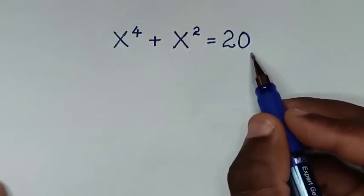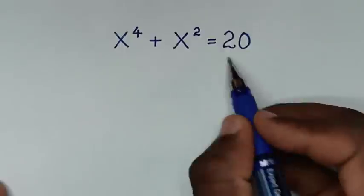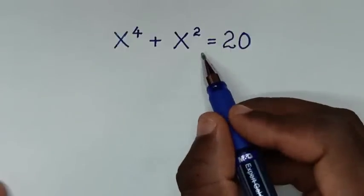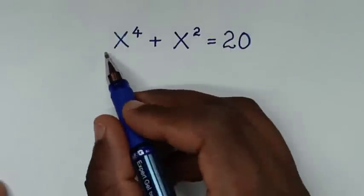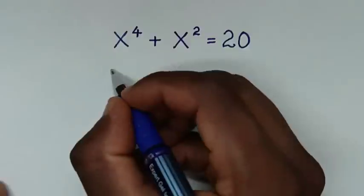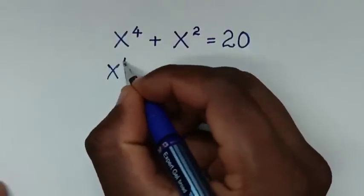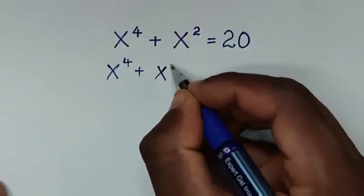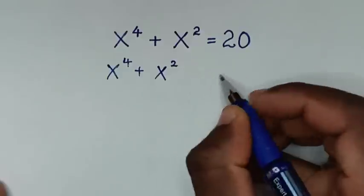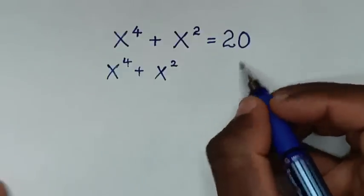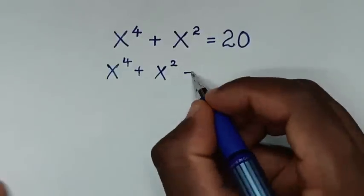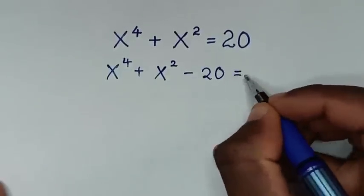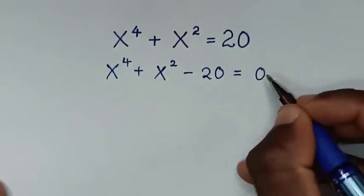In the first step we will take this 20 to the left side. So it will be x to the power 4 plus x to the power 2, and 20 moved to this side will be minus 20 is equal to 0.